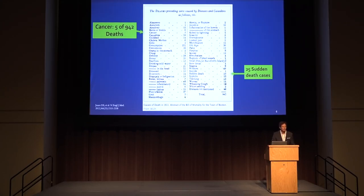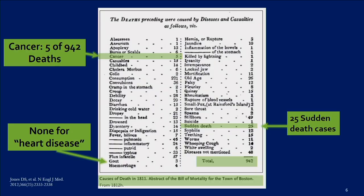Also from Joan's paper, this is a list of the causes of death in Boston in 1811. If you notice on the lower left, there is none listed for heart disease. On the far right, 25 sudden death cases. And in the upper left, cancer accounts for five of 942 deaths.